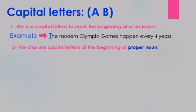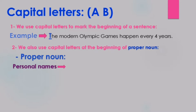We also use capital letters at the beginning of a proper noun — نستخدم الأحرف الكبيرة مع بداية الأسماء الصحيحة أو أسماء العلم. Proper nouns include personal names — أسماء الأشخاص — for example: Ahmad, Ali, etc.